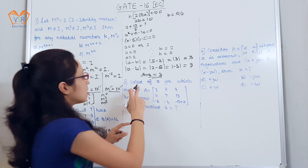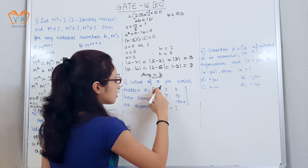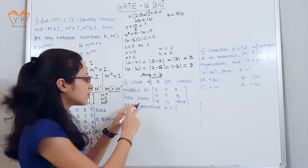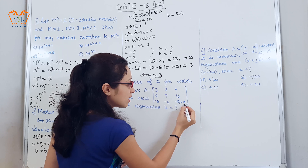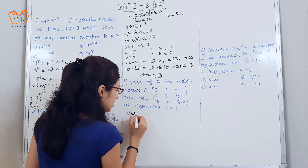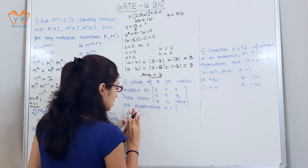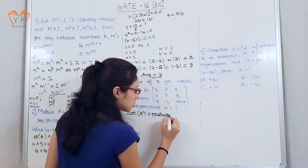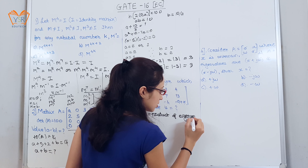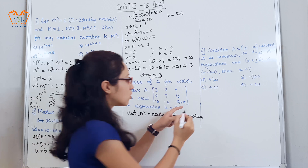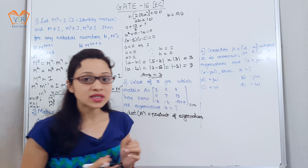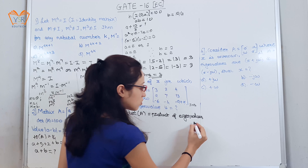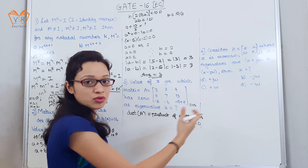The third example: find the value of x for which the 3×3 matrix A has a zero eigenvalue. They have told that one eigenvalue is 0 and asked for the unknown x. We know that the determinant of A equals the product of eigenvalues. Since the matrix is 3×3, there are 3 eigenvalues, one of which is 0, so the product of eigenvalues is 0, meaning the determinant of A must equal 0.